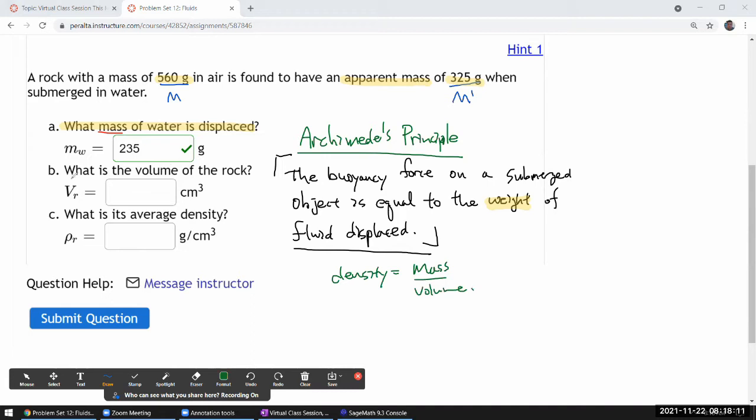So where it asks what is the volume of the rock, well we know how much mass of water it displaced. So we can use this expression, solve it for volume, and say the volume of the thing that the rock displaced—assuming the rock is completely submerged, which it sounds like it might be—the volume displaced is equal to